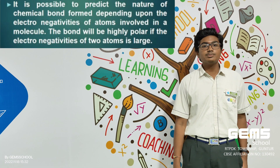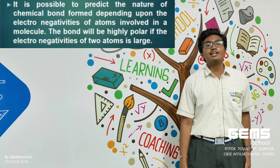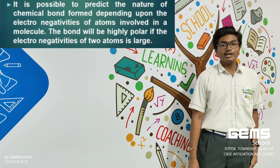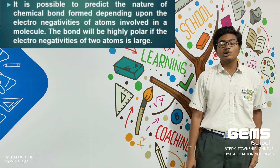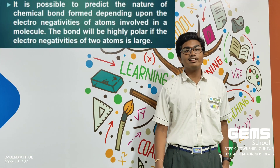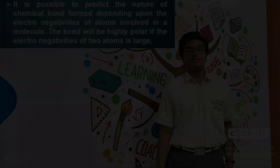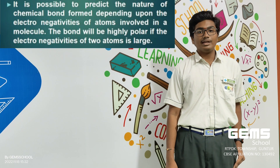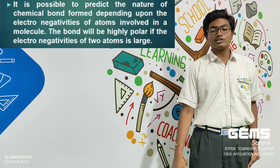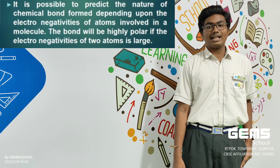It is possible to predict the nature of chemical bonds. Depending upon the electronegativities of the atoms involved in a molecule, the bond will be highly polar if the difference in electronegativities of the two atoms is large.